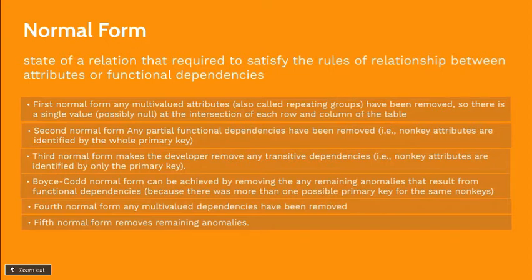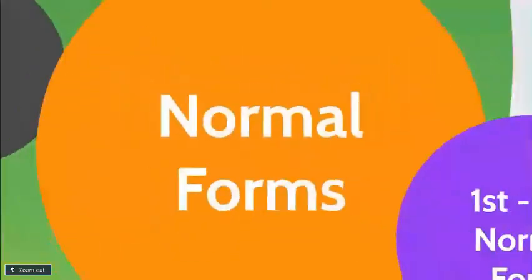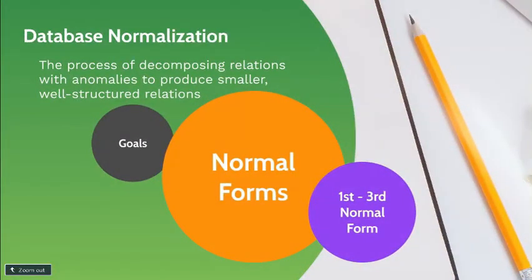Not all of these normal forms are used or achieved in current database development practices. Databases nowadays only achieve the Third Normal Form. The reason is that while trying to achieve higher normal forms, the number of tables in the database increases. As the number of tables increases, the performance of queries becomes slower because of too many associations or joins. So in our case, we will just put our database into the Third Normal Form.